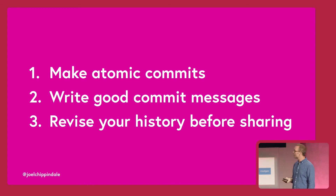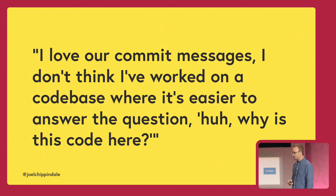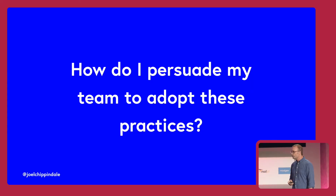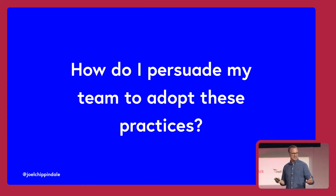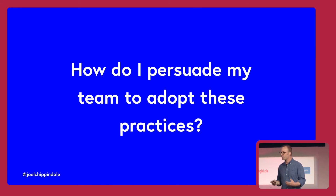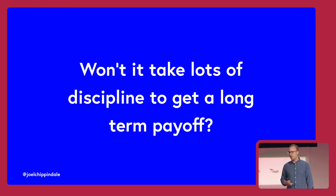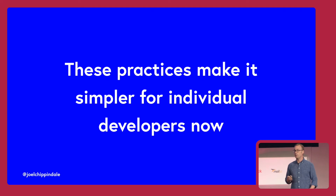So three principles: make atomic commits, write good commit messages, and revise your history before sharing. Perhaps you're sitting there as lead developers thinking this sounds like a really good idea — how am I going to take this back to my teams on Monday? How am I going to persuade them to adopt this practice, which seems like it has payoffs months, years down the line, and perhaps for other developers on the team? Won't this take a huge amount of discipline? Well, I think the key thing is all these practices make work for people in your teams simpler right now.